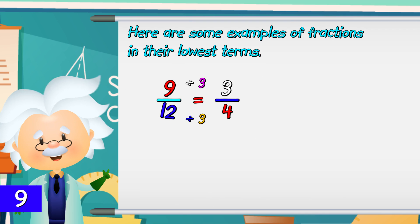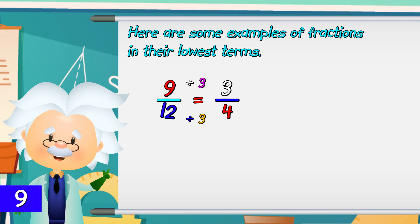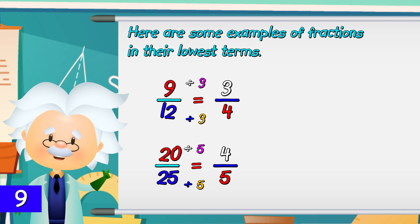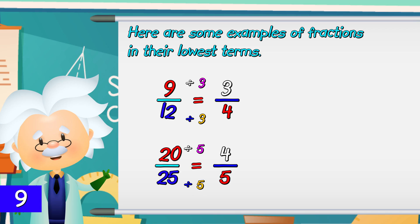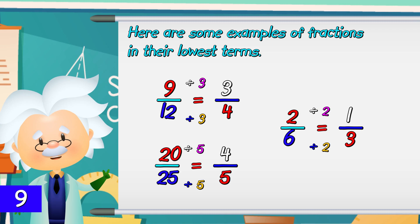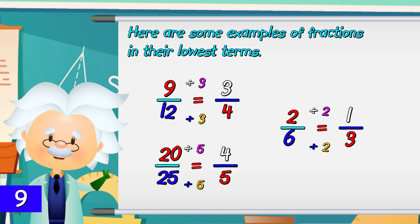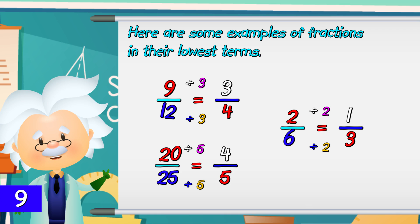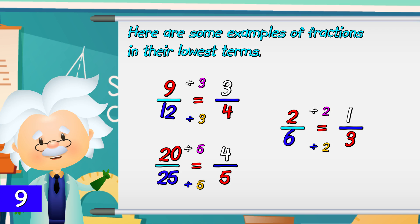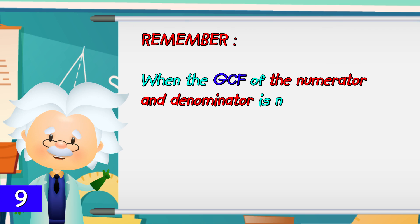Here are more examples. For 9/12, the GCF of 9 and 12 is 3; divide by 3 to get 3/4. For 20/25, the GCF of 20 and 25 is 5; divide by 5 to get 4/5. For 2/6, the GCF of 2 and 6 is 2; divide by 2 to get 1/3, which is the lowest term of 2/6.